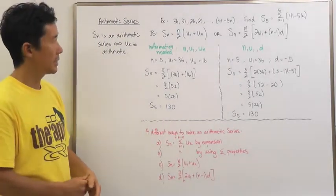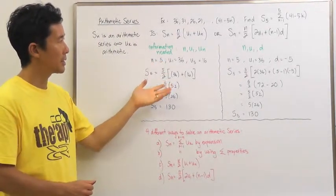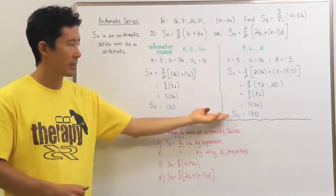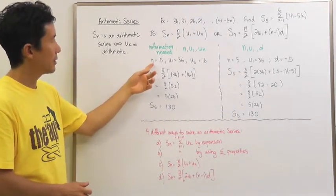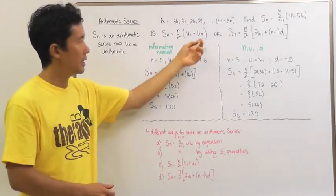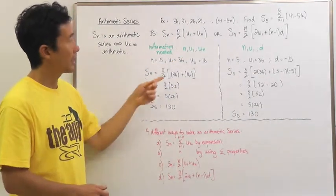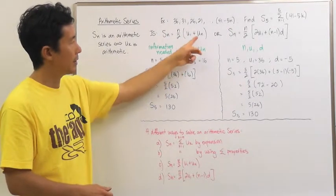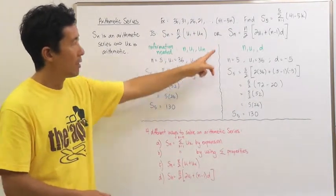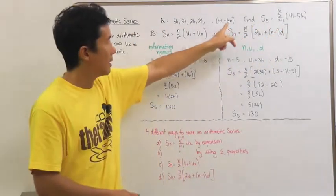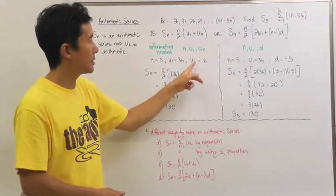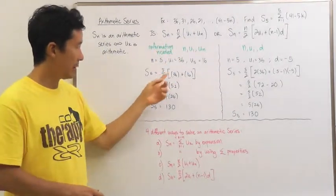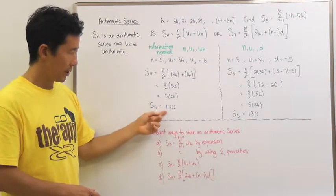Let's take a look at S sub 5 and find the sum using either one of these two formulas to show we come out with consistent results. Using the first formula: N is equal to 5, U sub 1 is equal to 36, and U sub 5 — since U sub N is 41 minus 5N — equals 16. Substituting into the formula gives S sub 5 equal to 130.